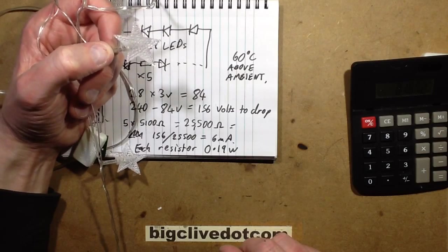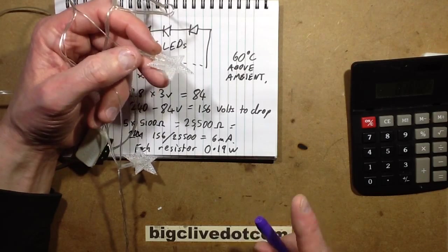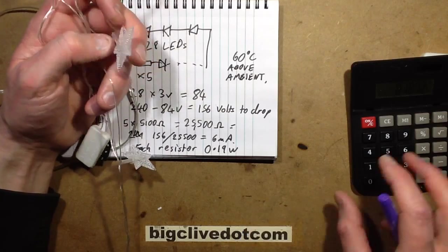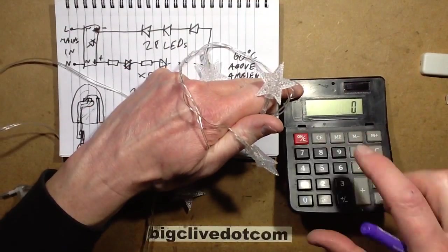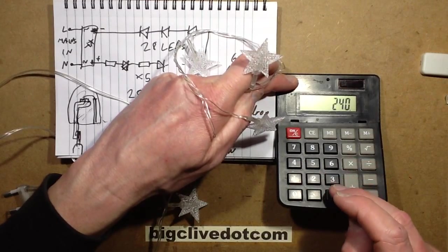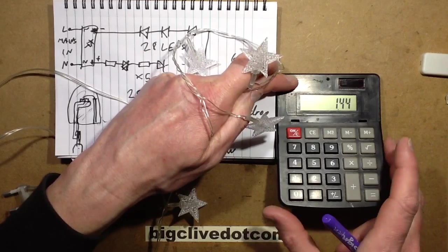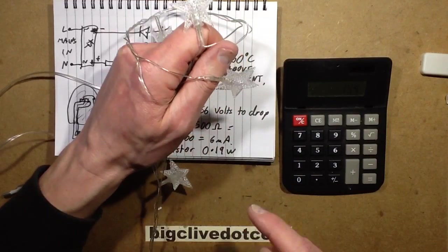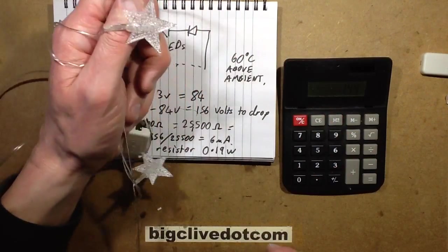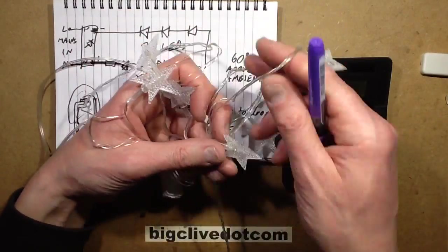So what else is there to say about this? The power would be the 240 volts, because it's all being dissipated across the LEDs and the resistors. It would be 240 volts times that 0.006 equals 1.44. We were getting roughly 1.5 watts on the meter, but that's probably with the tolerance of the meter. So it's not terribly high powered. It looks quite visual.